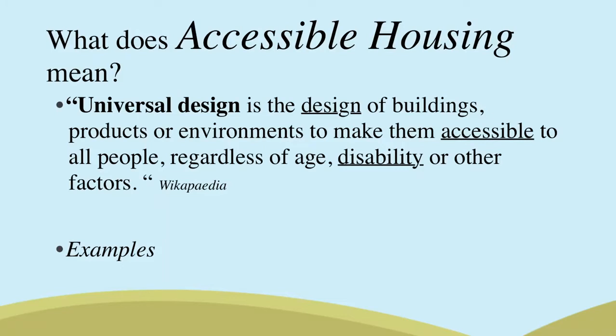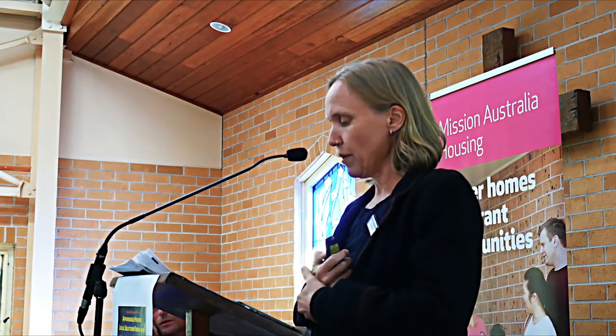So what is universal design? I've seen a slightly different definition, but the rough concept is you design something — it doesn't have to be a house — so that it suits a person throughout the range of their life or their life's abilities. When we think about that in regards to building, there's a heap of examples of universal design which are already kind of ingrained in our processes.